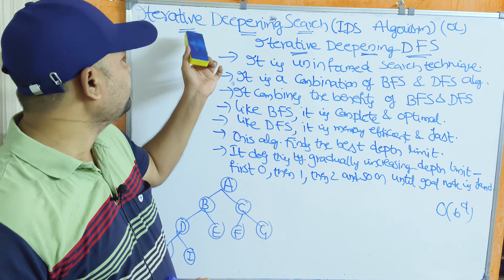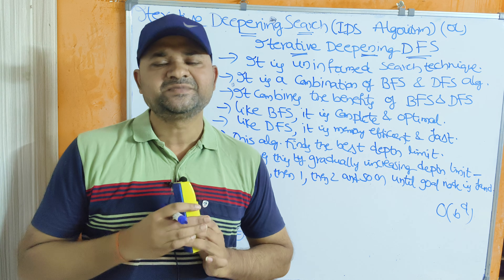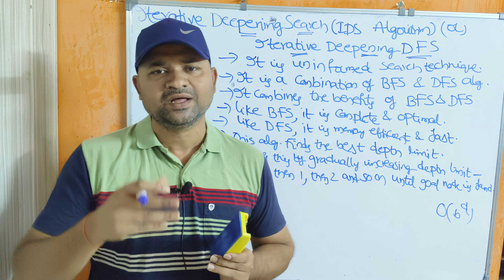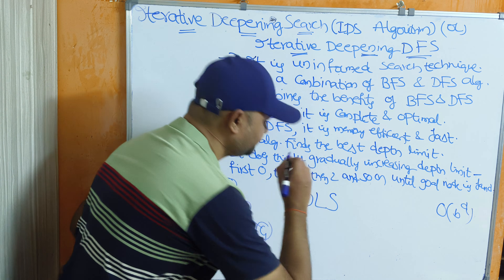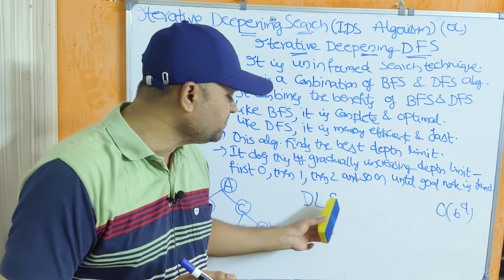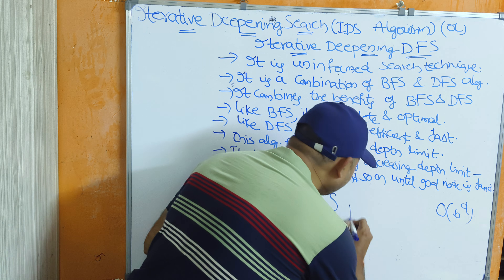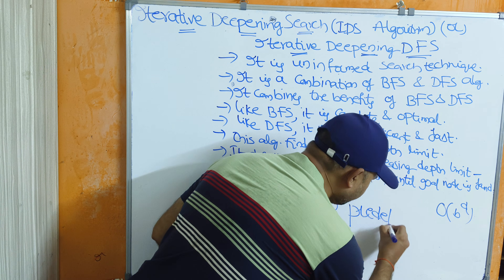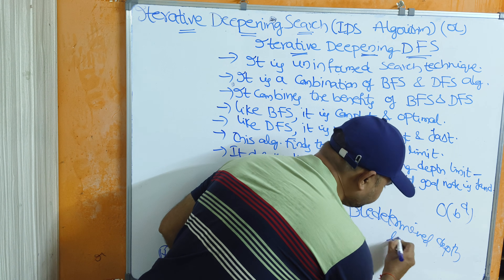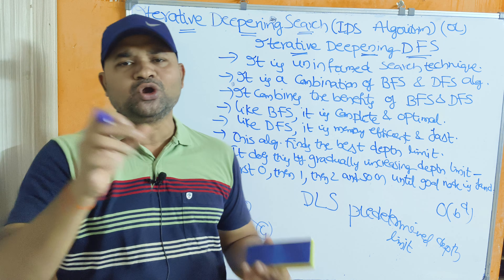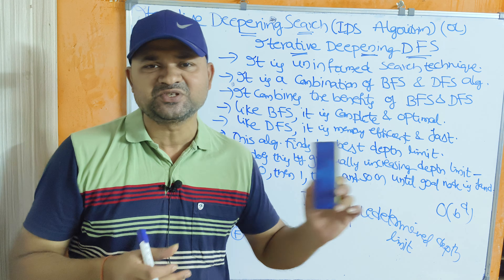First, let us see the advantage of IDS algorithm. Iterative deepening search is mainly useful to overcome the drawback of depth-limited search algorithm. The major drawback of depth-limited search is that we maintain a predetermined depth limit. If the goal node is beyond that depth limit, then the search is incomplete — it doesn't produce a solution.